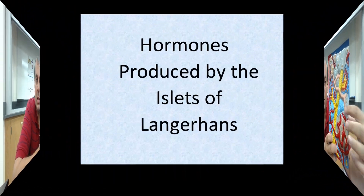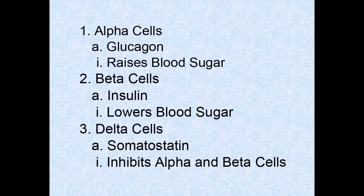There are two residents in the pancreas: exocrine cells and endocrine cells. The endocrine cells — which we covered in the endocrine video — produce glucagon, insulin, and somatostatin to raise blood sugar, lower blood sugar, or inhibit both.